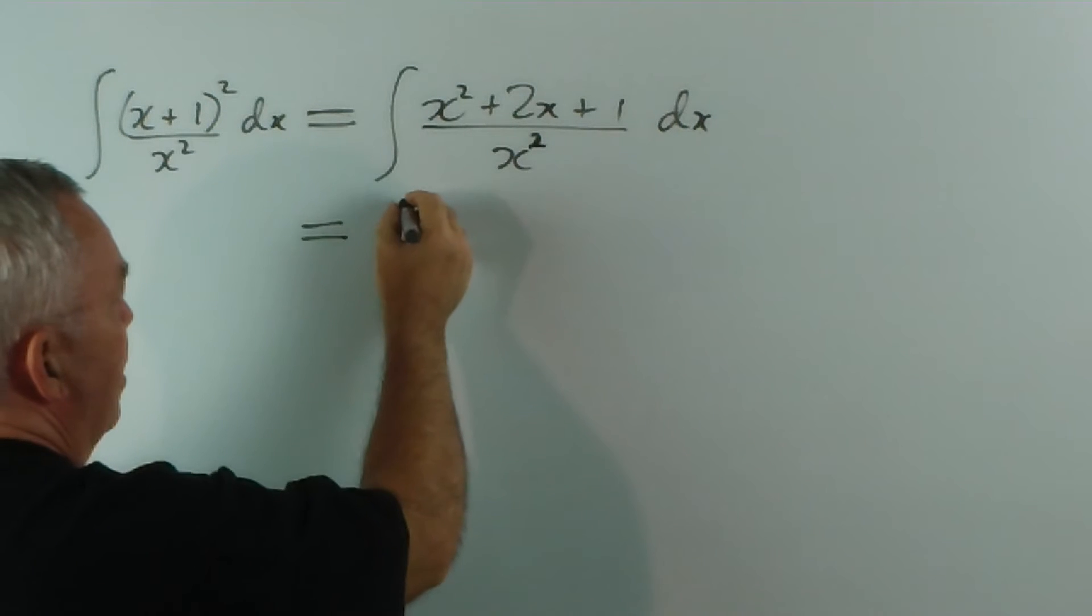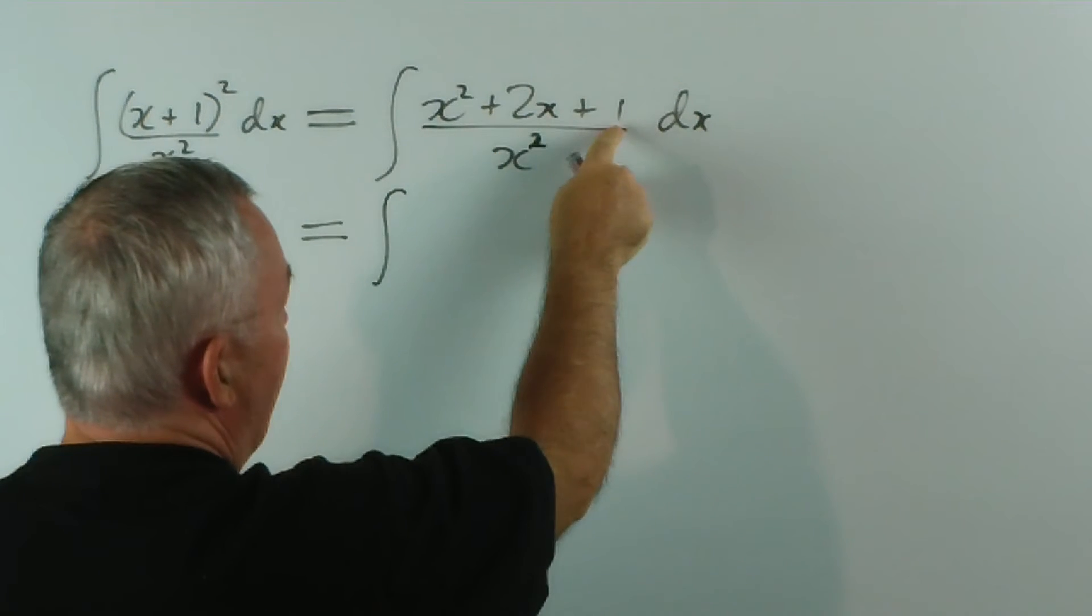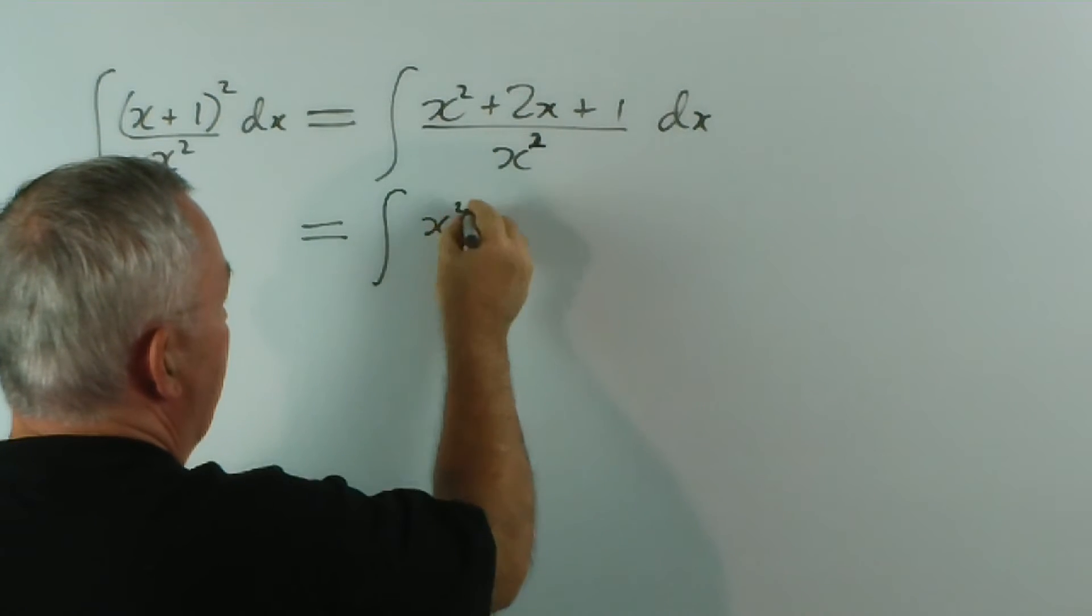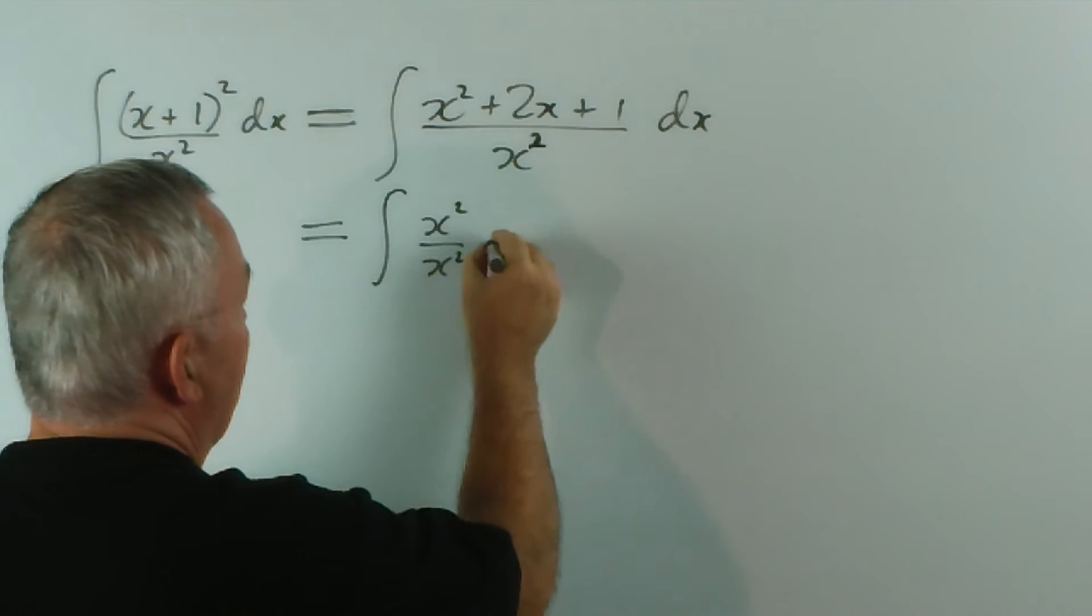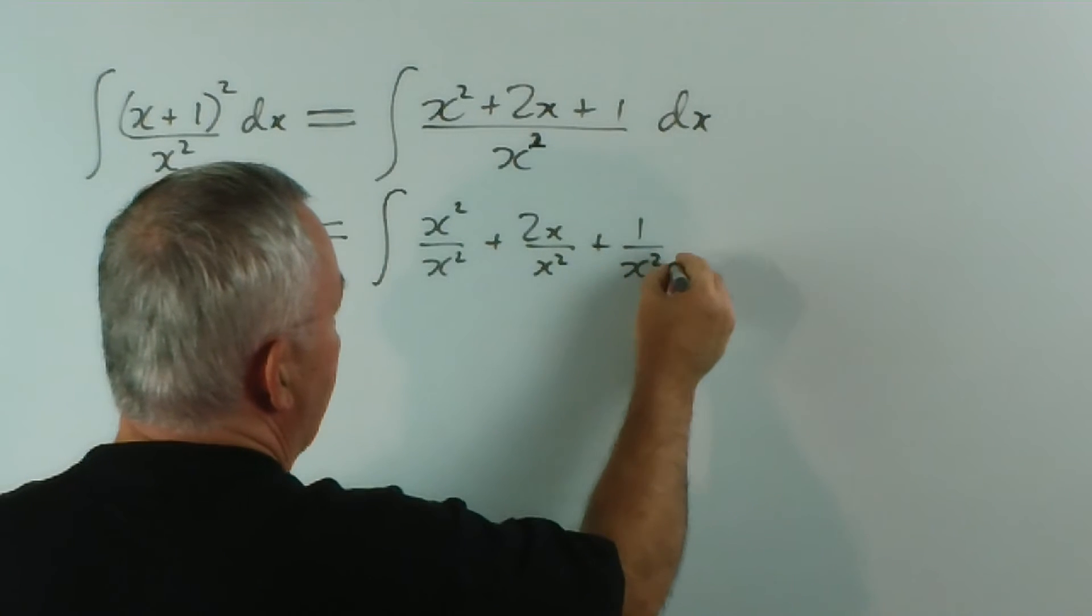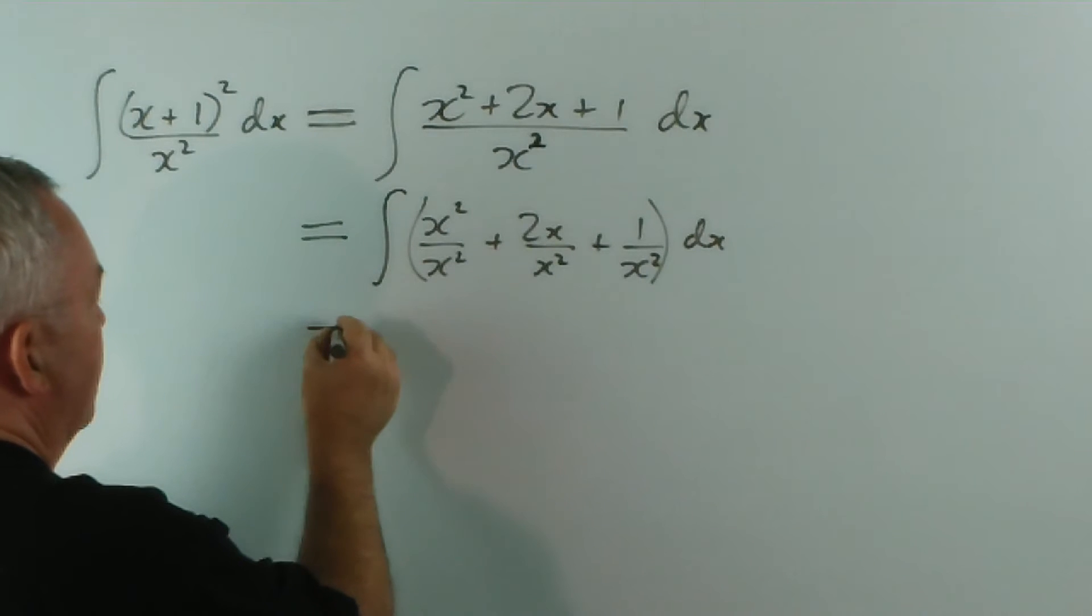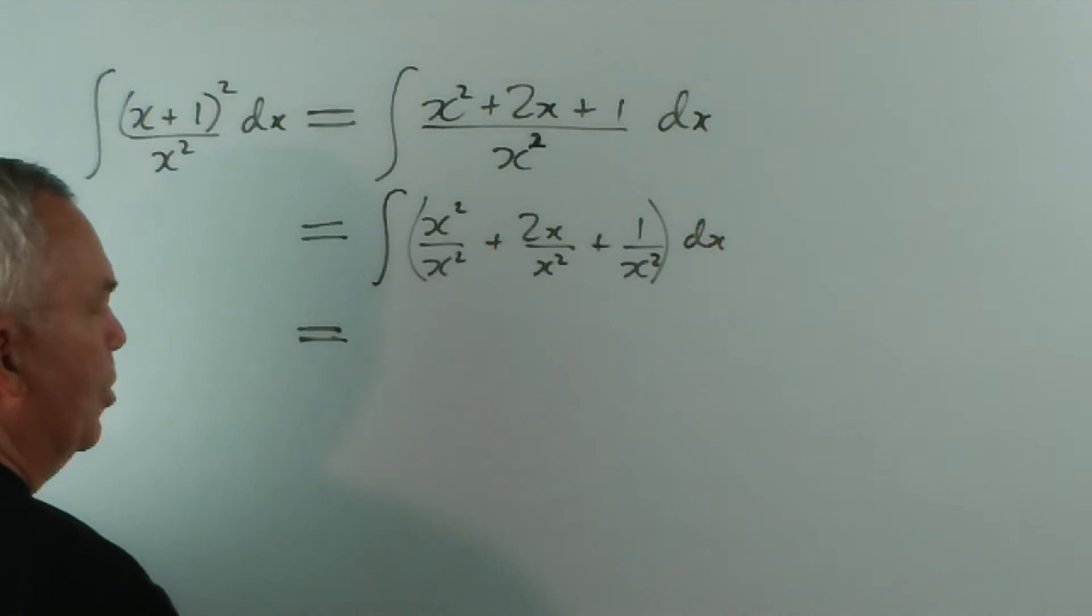So, we have to separate these three terms out as x squared over x squared plus 2x over x squared plus 1 over x squared dx, to make three smaller functions.